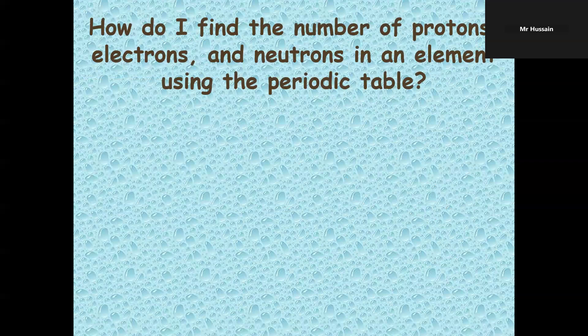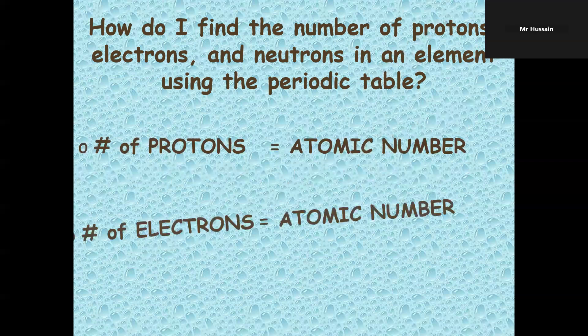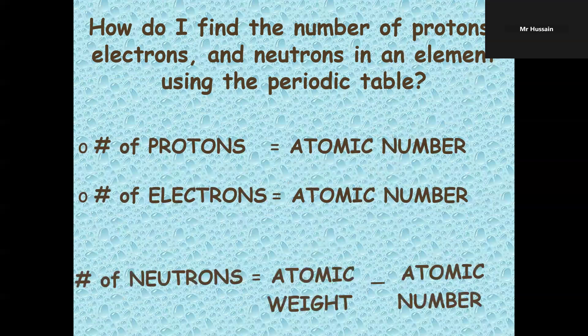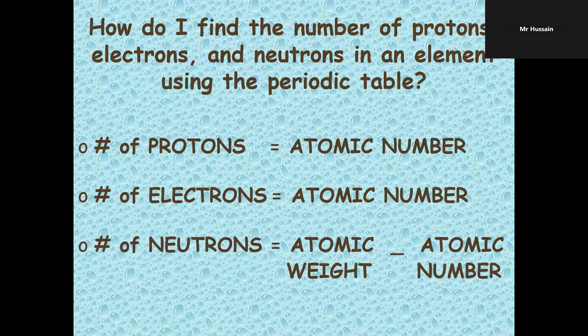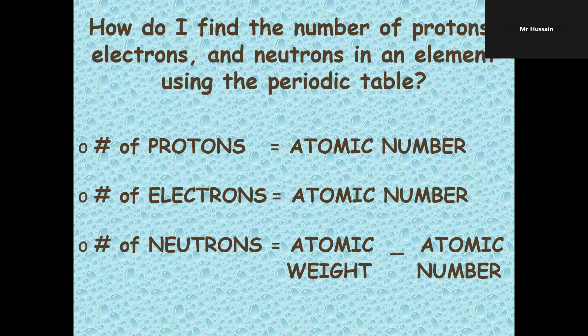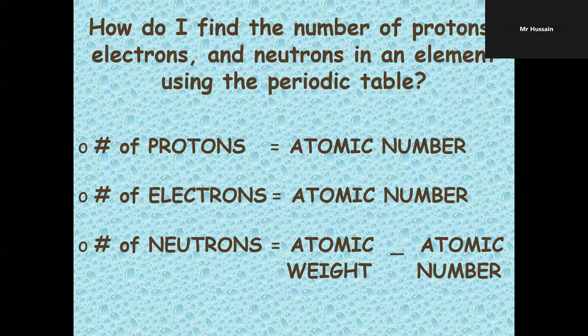How do I find the number of protons, electrons, and neutrons in an element using the periodic table? Number of protons in an atom tells us atomic number. Number of electrons are equal to the number of protons, therefore number of electrons equal atomic number.